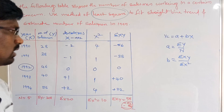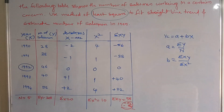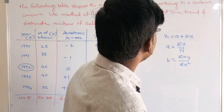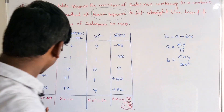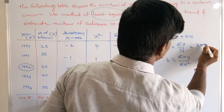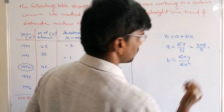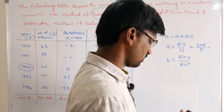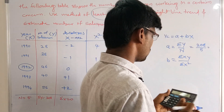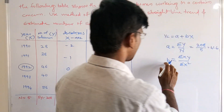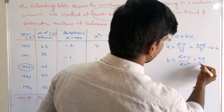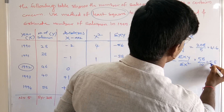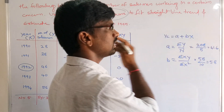Implementing all these values into the formulas: a = summation of y / n = 208 / 5 = 41.6, and b = summation of xy / summation of x squared = 58 / 10 = 5.8. So the value of a is 41.6 and the value of b is 5.8.